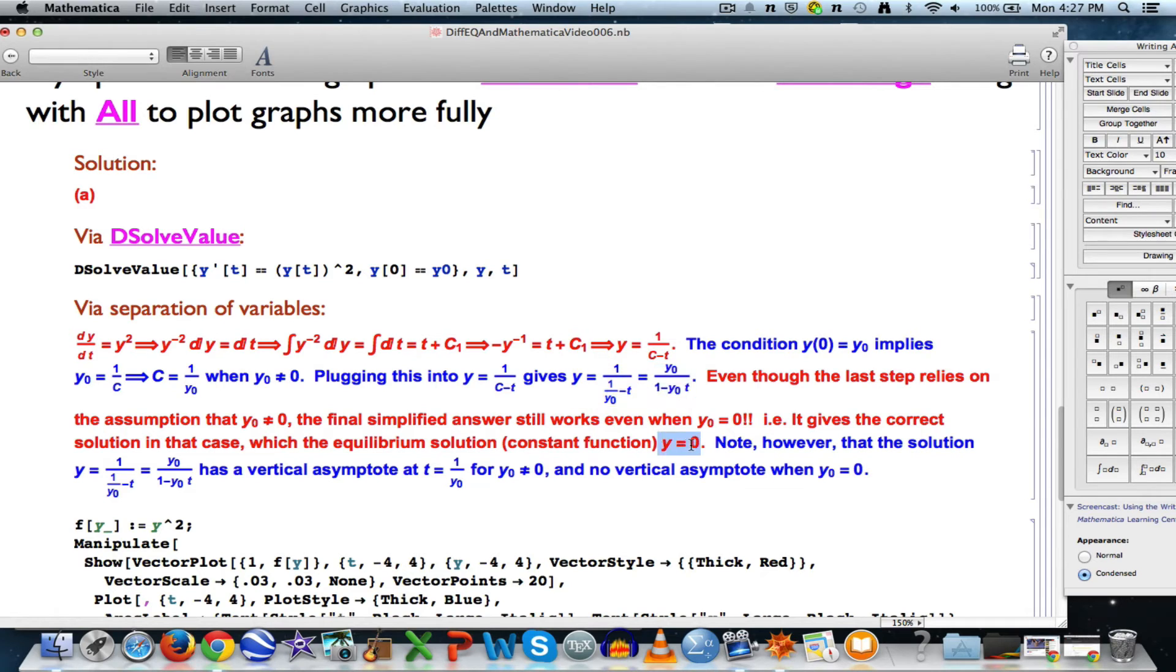For all t, its graph is a horizontal line. On the other hand, if y0 is not 0,